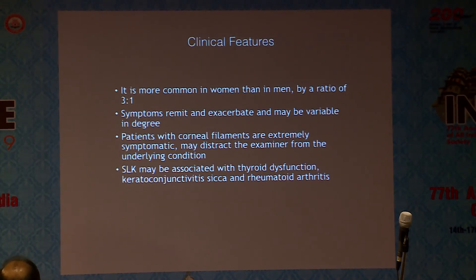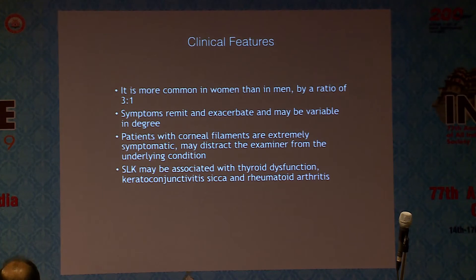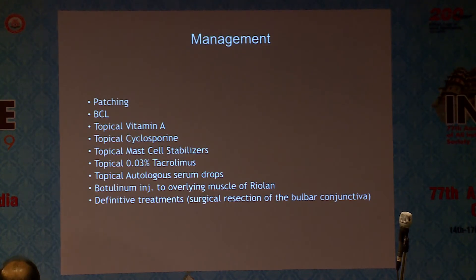SLK is more common in females and symptoms may remit and exacerbate in varying degrees. Patients with corneal filaments are very symptomatic and can distract from examination. SLK may be associated with thyroid dysfunction, keratoconjunctivitis sicca, and rheumatoid arthritis. Management options include patching, bandage contact lens, topical vitamin A, topical cyclosporine drops, mast cell stabilizers, trocular limbic ointments, and autologous serum drops. The best treatment is surgical resection of the redundant bulbar conjunctiva.